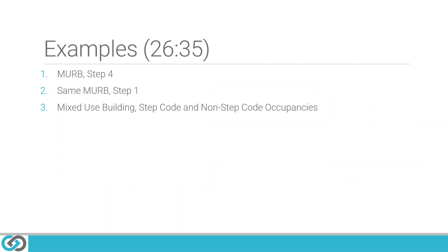The next section goes through three examples completed in the report itself on screen. The first example is for a multi-unit residential building (MERB) achieving Step 4. The second example takes the same MERB but switches it to Step 1, examining the differences in the report between a Step 1 occupancy and a Step 4 building. The third example is for a mixed-use building containing both Step Code and non-Step Code occupancies.